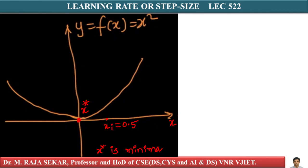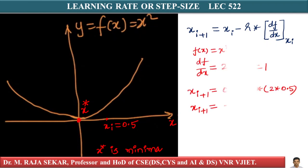Now my xi+1 = xi - r·(df/dx) at xi. What is df/dx here? My f(x) = x², so df/dx is 2x. We kept r as constant. Let me assume r = 1.